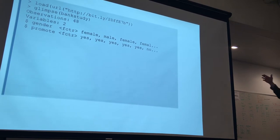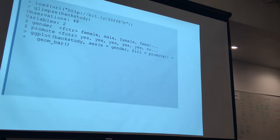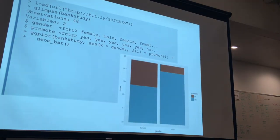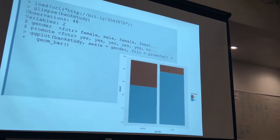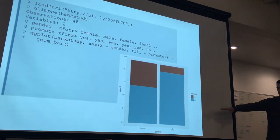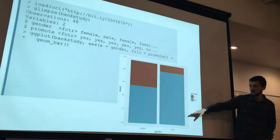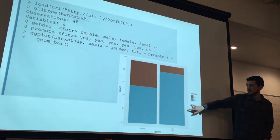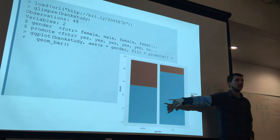Looking at those two categorical factors, if we want to do some exploratory data analysis we can make a plot using ggplot — a stacked bar chart. The bar on the left corresponds to male applications and the right to female applications. You can see that males in our dataset were promoted at a much higher rate than females.